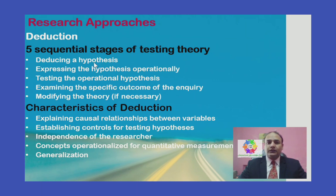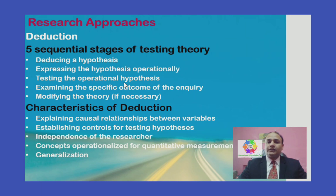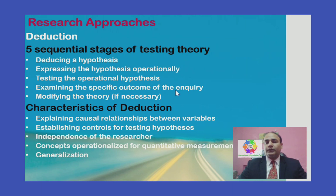The stages are: number one, reducing our hypothesis — first we assume a hypothesis. Number two, expressing the hypothesis operationally — we express it in the form of a statement. Number three, testing the operational hypothesis — we operationalize and test the hypothesis. Number four, examining the specific outcomes of the inquiry — we look at what data we collected based on the hypothesis, apply methodology, and analyze the outcomes. Number five, modify the theory if necessary.